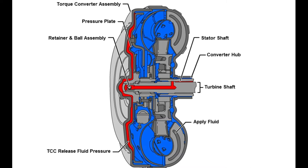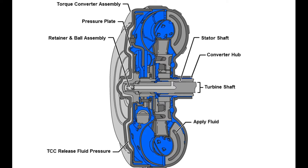The pressure plate is splined to the turbine hub and applies with the converter cover to provide a mechanical coupling of the engine to the transmission. The front of the pressure plate is covered with friction material. When the vehicle reaches approximately 30 miles per hour, fluid pressure is exhausted from the front side of the pressure plate. This allows the fluid pressure on the back side of the pressure plate to force the friction material to engage against the converter cover, creating a mechanical link between the engine and transmission.